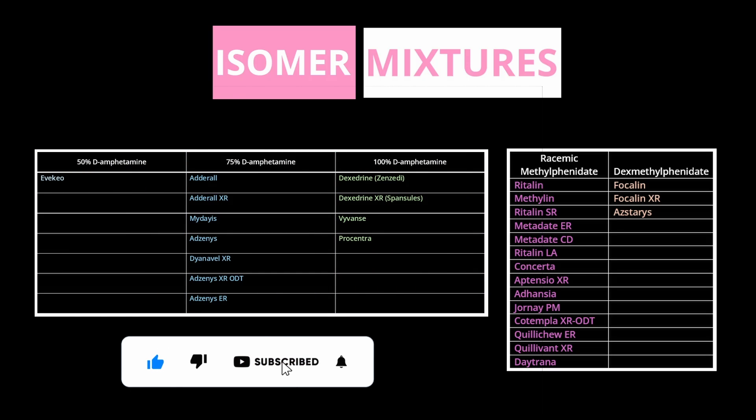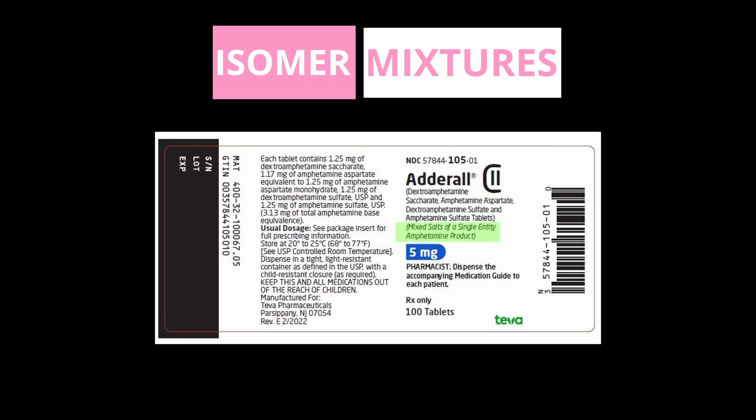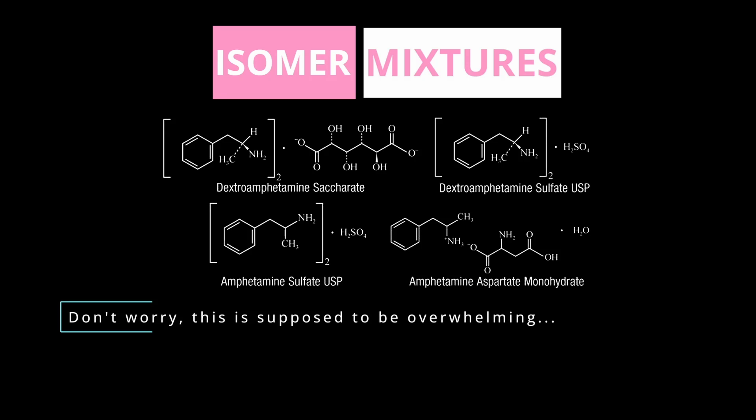Let's look at Adderall to make more sense of this. Adderall is called mixed amphetamine salts because it contains four different salts of amphetamine: 25% dextroamphetamine sulfate, 25% dextroamphetamine saccharate, 25% amphetamine sulfate, and 25% amphetamine aspartate monohydrate. Just ignore the salt part — the sulfate, saccharate, and aspartate monohydrate have nothing to do with the mechanism of action. The salt dissociates from the amphetamine and does absolutely nothing.